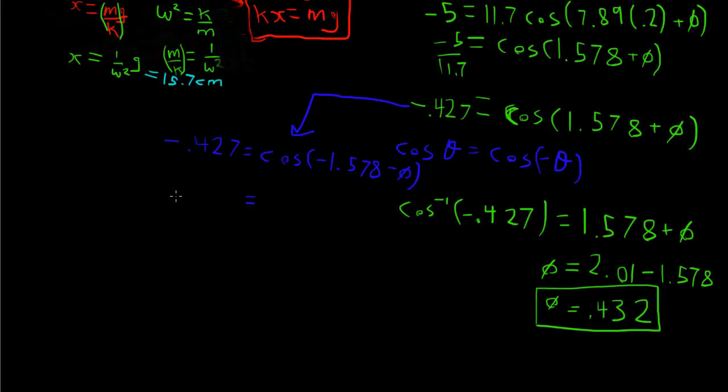So since the cos theta is the cos negative theta we'll make whatever is inside the bracket negative. Okay then I'm going to switch sides here. Okay we already have the cos inverse of negative 0.427. That was 2.01. And then now we move the negative 1.5 over here.